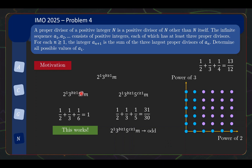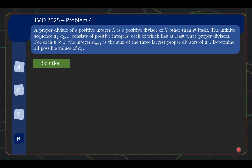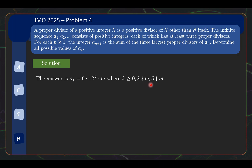We've gathered enough ingredients to now put together the solution formally. Remember all these things about 5 appearing or not — that's why the eventual solution looks like this. The answer is that the valid a1 values are of the form 6 · 12^k · m, where k ≥ 0, 2 does not divide m, and 5 does not divide m. As mentioned, this answer looks very weird — it's something you would not think of out of thin air.